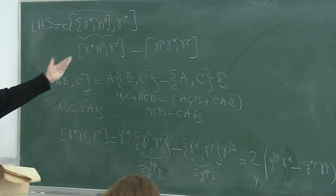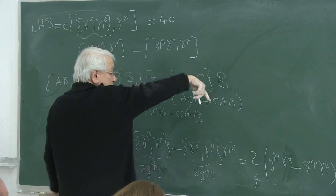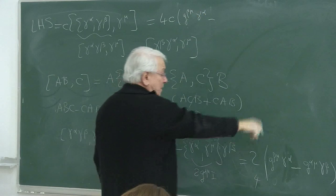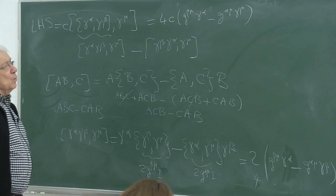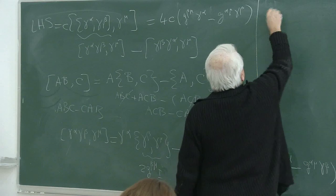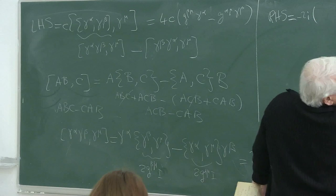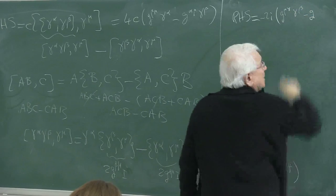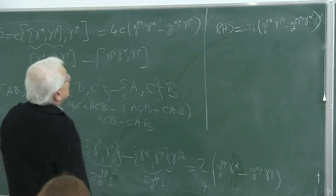The second term in the commutator [γ_α, γ_β]γ^μ, replacing α↔β with a minus sign, gives 2g^{αμ} gamma_β minus 2g^{βμ} gamma_α. The entire difference gives a factor of 4, so the left-hand side is 4c(g^{βμ} gamma_α minus g^{αμ} gamma_β). The right-hand side is minus 2i(g^{μα} gamma_β minus g^{μβ} gamma_α).